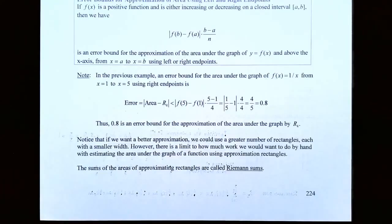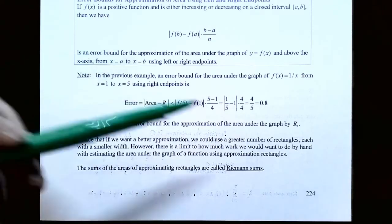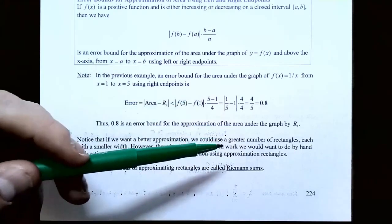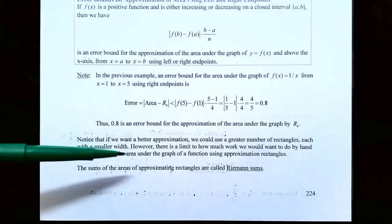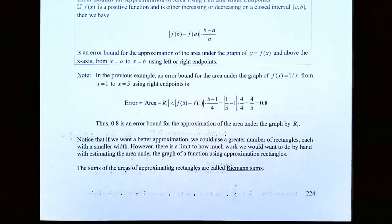So 0.8 is the error bound for the approximation of the area under the graph using right-hand endpoints with four rectangles. Notice that if we want a better approximation, we don't have to use just four rectangles. If we increase the number of rectangles — meaning each rectangle has a smaller width — we can get a better approximation. However, there's a limit to how much work we want to do by hand.